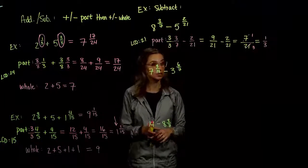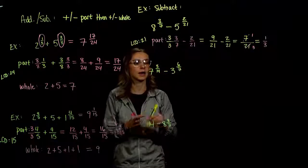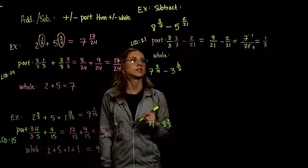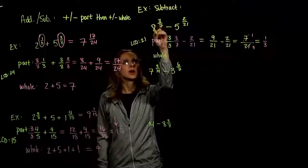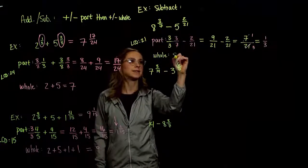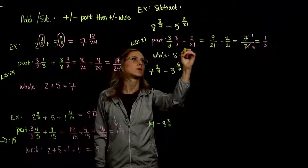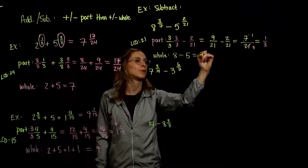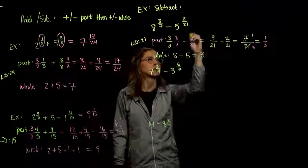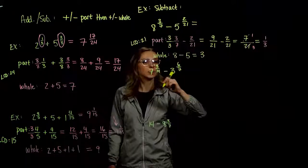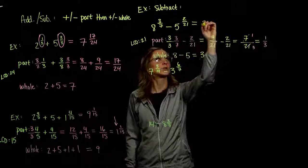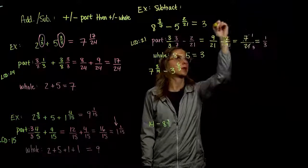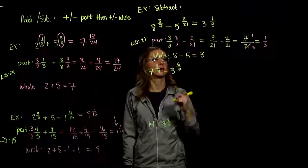That was just the part. Now let's look at the whole. The whole part of the first number is eight, the whole part of the second is five, and that is a difference of three. So the difference between these mixed numbers is three and one-third.